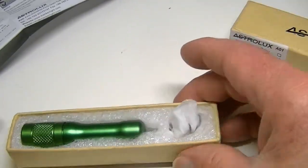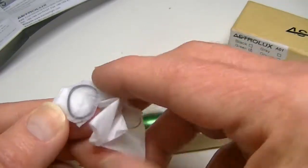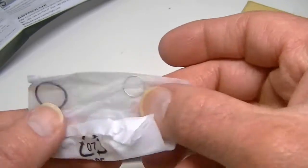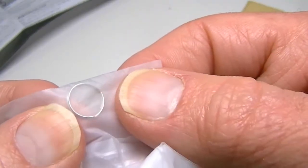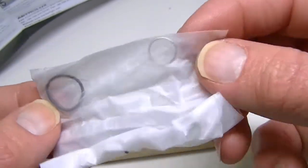As far as accessories, let's look at the rest of the package here. Not much in here except the little ring to attach to a key ring and a spare o-ring. So those are your accessories there.